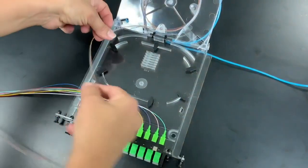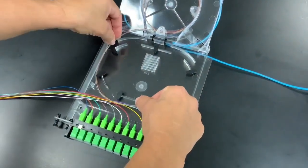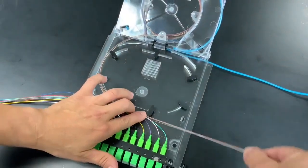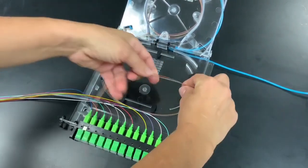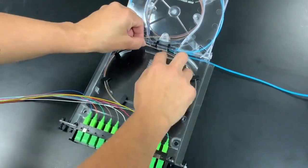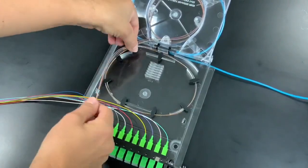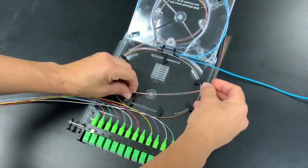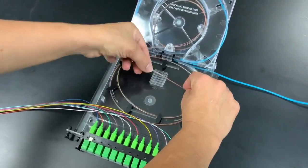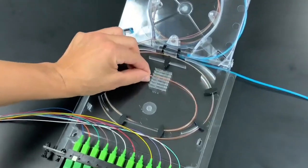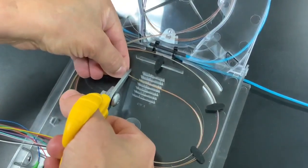In a similar style, route the 250 micron fibers around the inside track of the raceway. Cut the length if necessary.